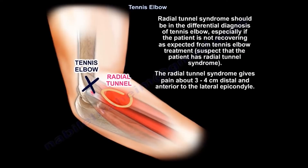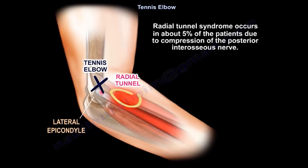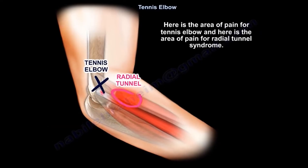Radial tunnel syndrome should be in the differential diagnosis of tennis elbow, especially if the patient is not recovering as expected. It gives pain 3–4 cm distal and anterior to the lateral epicondyle, and occurs in about 5% of patients due to compression of the posterior interosseous nerve. The pain locations for tennis elbow and radial tunnel syndrome are totally different.